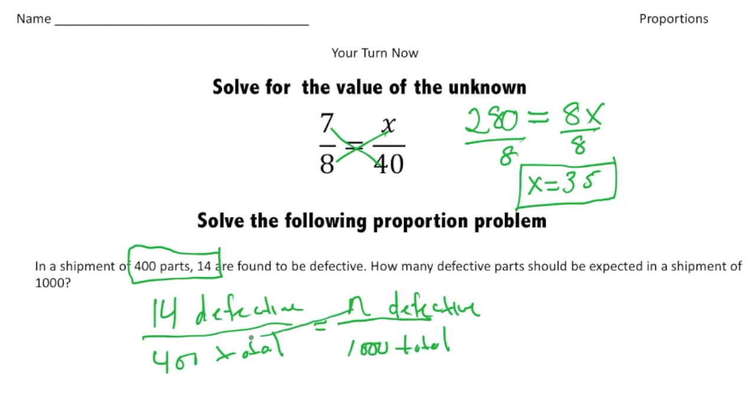So I know that 400 times n is 400n. And that's going to equal 14 times 1000, which is 14,000. And now to solve for n, I'm going to divide both sides by 400.